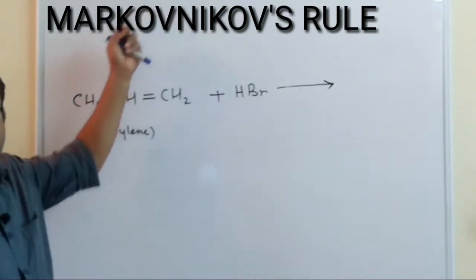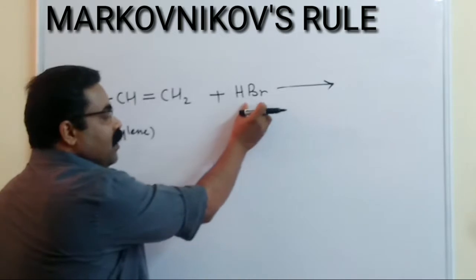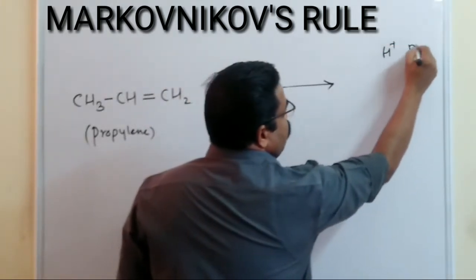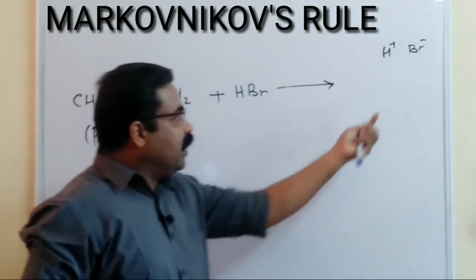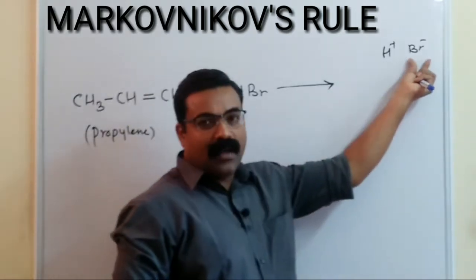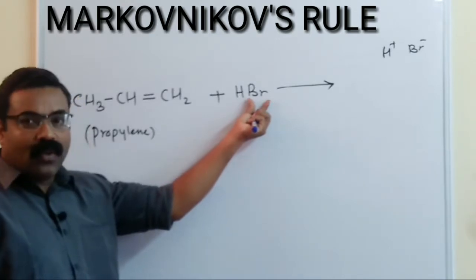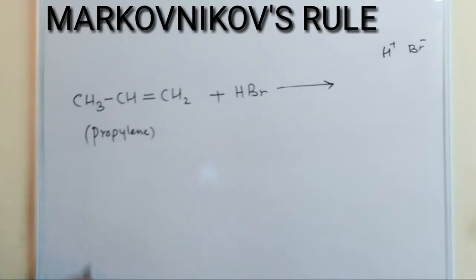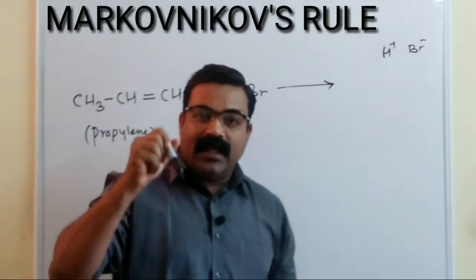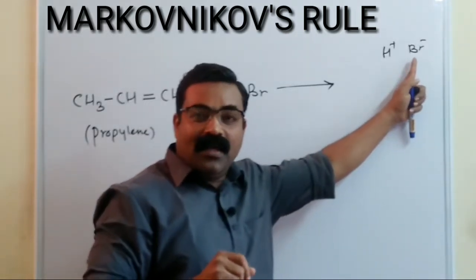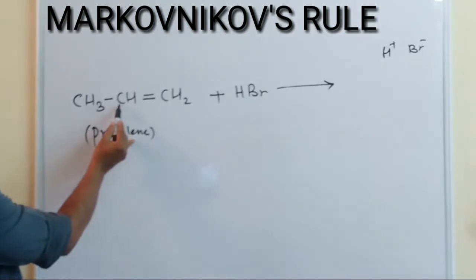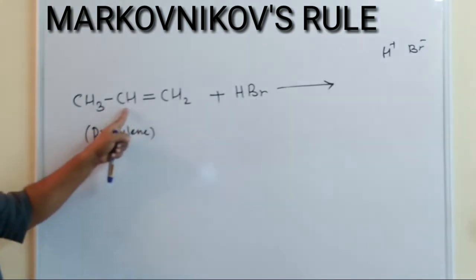When this reaction takes place, it follows Markovnikov rule. What is Markovnikov rule? Whenever a hydrogen halide reacts with an unsymmetrical alkene, we break HBr into H⁺ and Br⁻. The negative part of the addendum — here Br⁻ — will go to that carbon which has the less number of hydrogen atoms. This carbon has three hydrogens, this one has two, and this one has only one hydrogen, so Br goes to the carbon with fewer hydrogens.